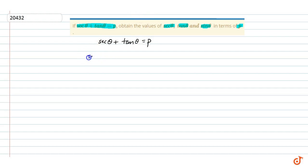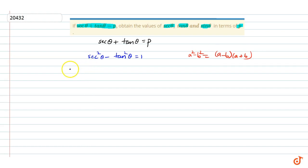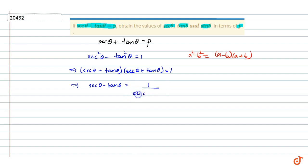We know the trigonometric identity sec squared theta minus tan squared theta equals to 1, and using the a squared minus b squared formula, that is a minus b into a plus b. So we can write sec theta minus tan theta into sec theta plus tan theta equals to 1. That gives sec theta minus tan theta equals to 1 upon sec theta plus tan theta, which equals to 1 upon P.